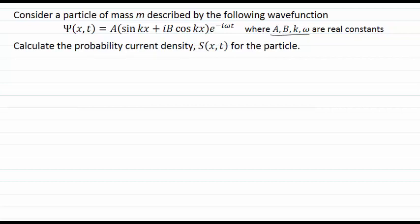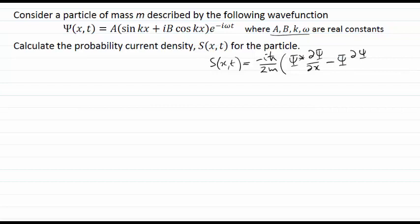To begin, let's remember how we calculate a probability current density based upon a wave function. The probability current density, capital S, is this combination out the front of minus i h-bar divided by twice the mass, multiplied by a combination of ψ*, the complex conjugate of the wave function, multiplied by dψ/dx, minus ψ multiplied by the derivative of ψ*, dψ*/dx.